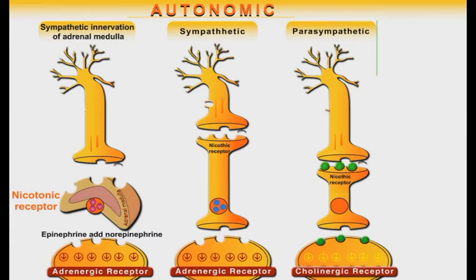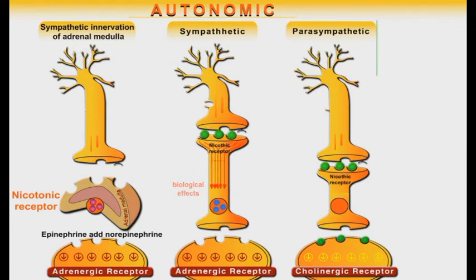Similar to the parasympathetic system, acetylcholine is the main neurotransmitter at the sympathetic ganglionic nicotinic receptors. However, norepinephrine and not acetylcholine is the main transmitter at the synapses of the sympathetic system. Therefore, these receptors at the effector organs are called adrenergic receptors.